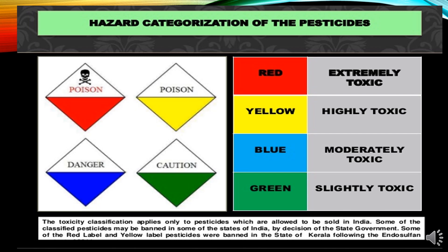The toxicity classification applies only to pesticides which are allowed to be sold in India. Some of the classified pesticides may be banned in certain states of India by decision of the state government. Some of the red level and yellow level pesticides were banned in the state of Kerala following the Endosulfan case.